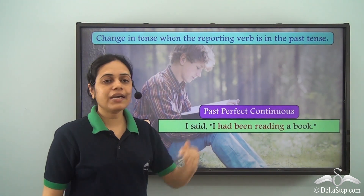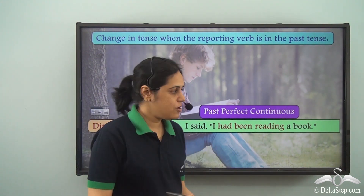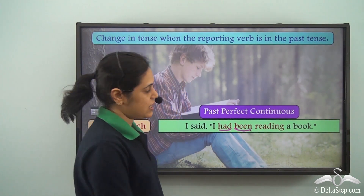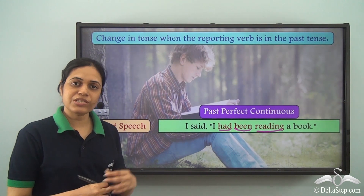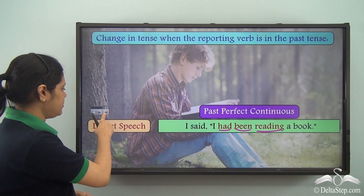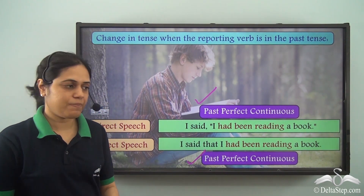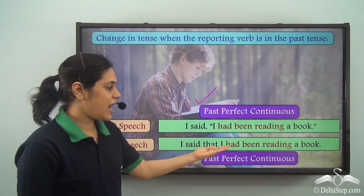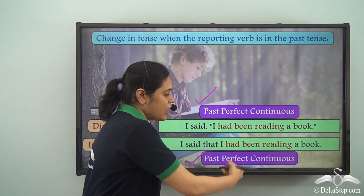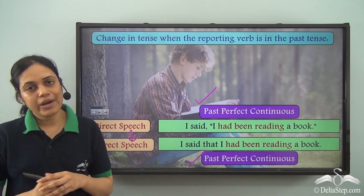Similarly for past perfect continuous: I said I had been reading a book. 'Had' means past, 'been' means perfect, and 'reading' means continuous. In indirect speech, the tense remains the same: I said that I had been reading a book. So past perfect continuous remains past perfect continuous when we convert from direct to indirect speech.